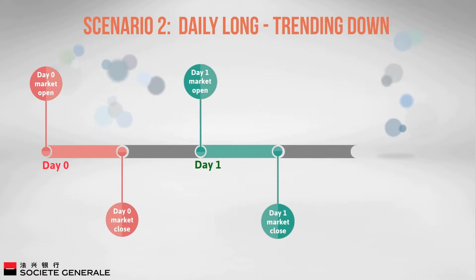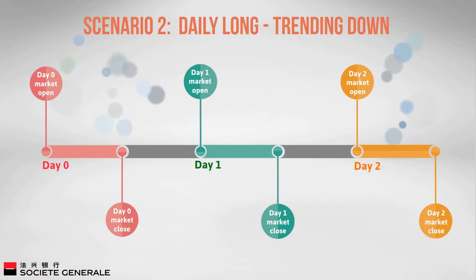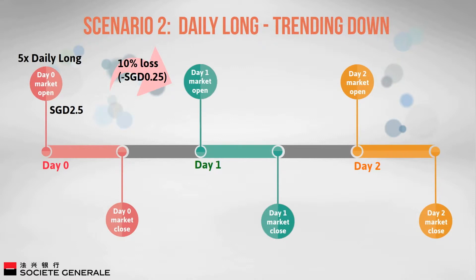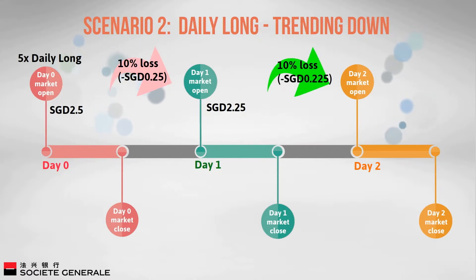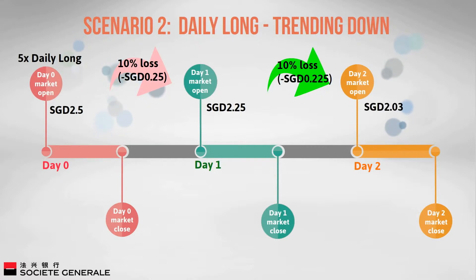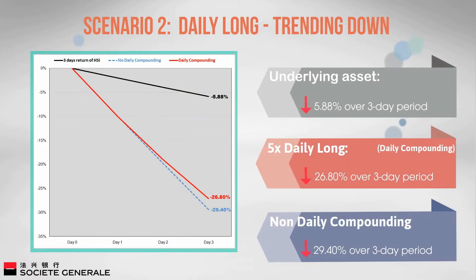For example, on day one the 10% loss to five times daily long is applied to 2.5 Singapore dollars, creating a 0.25 Singapore dollars loss. However, by day two the 10% loss is applied to 2.25 Singapore dollars, creating a loss of 0.225 Singapore dollars. If compounding was not applied, the product would have lost 29.4% (calculated as 5.88% × 5), assuming the underlying asset has an initial constant decrease of 5.88%.